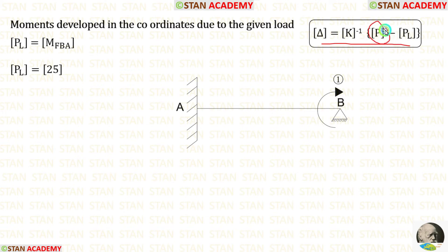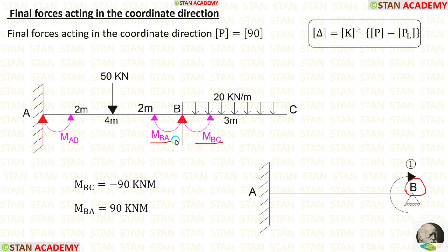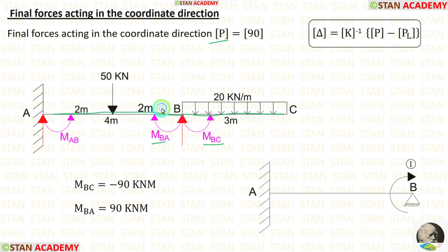Now let us calculate the P matrix. The P matrix contains the final forces or moments acting in the coordinate direction at point B. We have already calculated two final moments, MBA and MBC. We should not select MBC because it acts in the overhanging span. MBA acts in span BA, so for the P matrix we select MBA which equals 90.